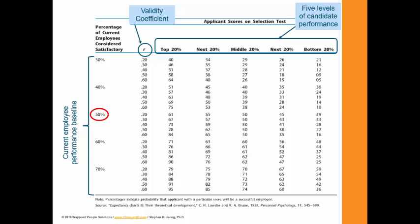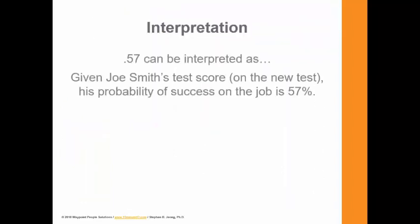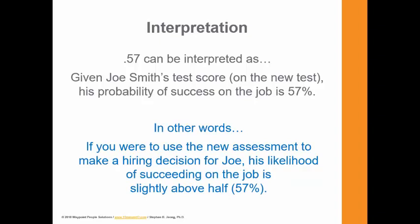We said the performance baseline was 50% and the validity coefficient was 0.3. Joe Smith scored in the second 20% band. You can see the three red circles there — the intersection says 57. That 57 represents the probability that the applicant, Joe Smith, with a particular score will be a successful employee. So 0.57 can be interpreted as: given Joe's test score on this new test, his probability of success on the job is 57%. If you were to use this assessment to make a hiring decision for Joe, his likelihood of succeeding on the job is slightly above half, at 57%.